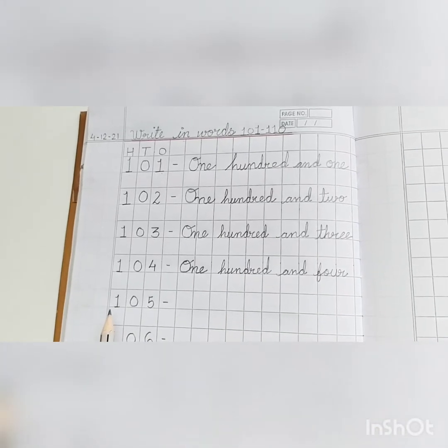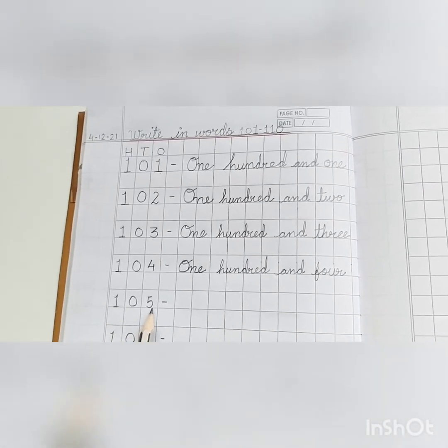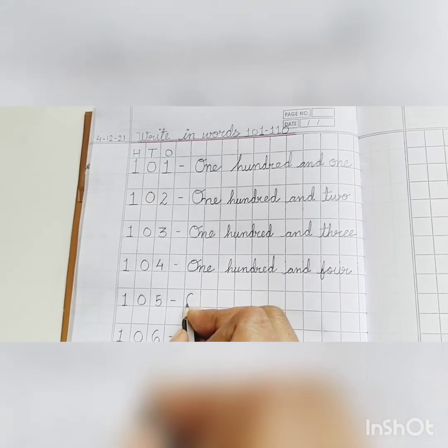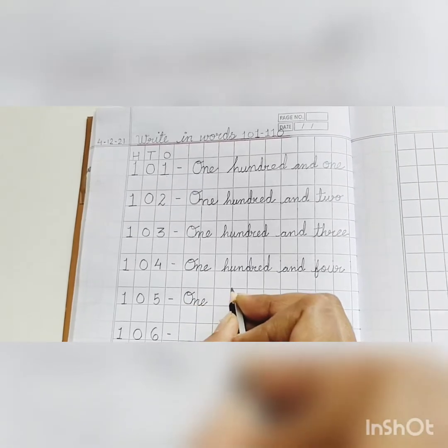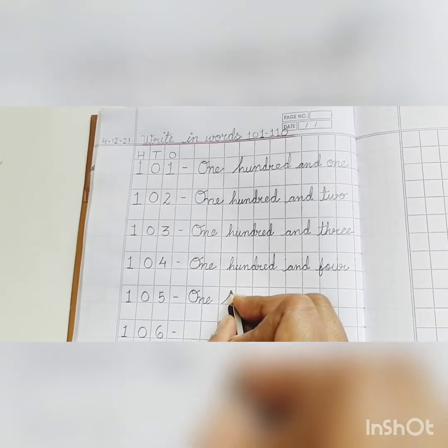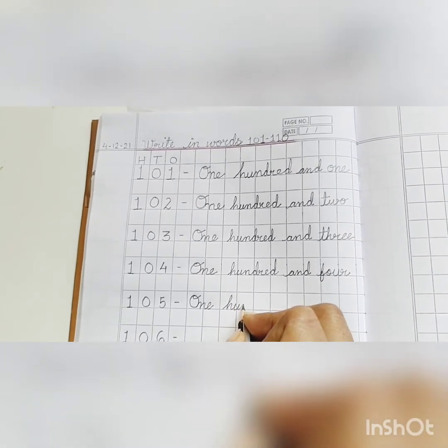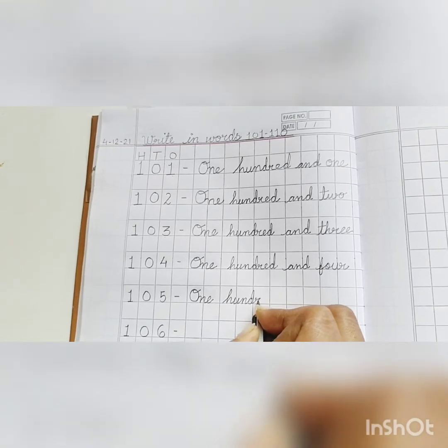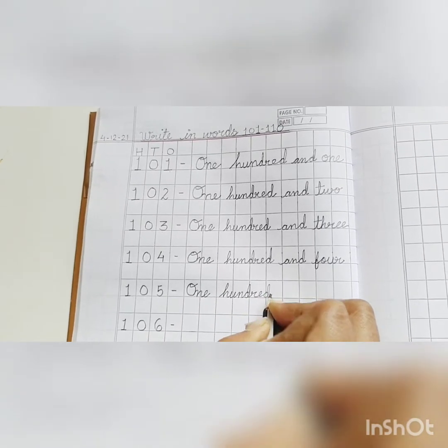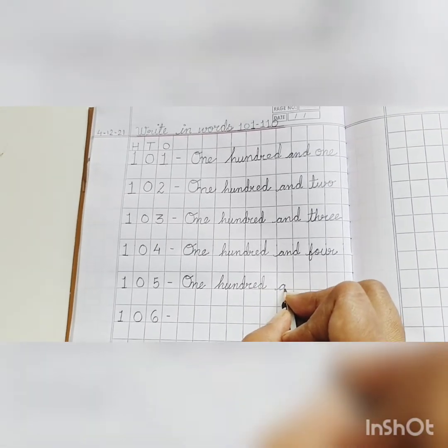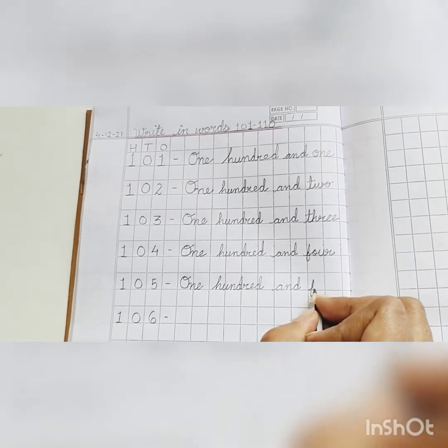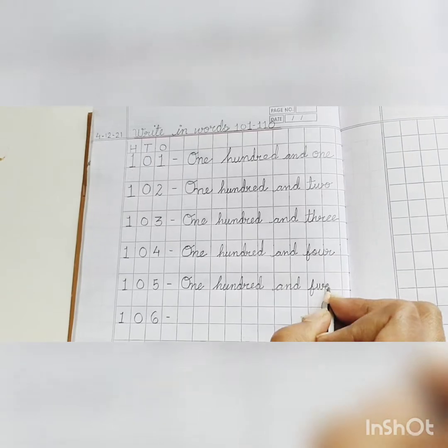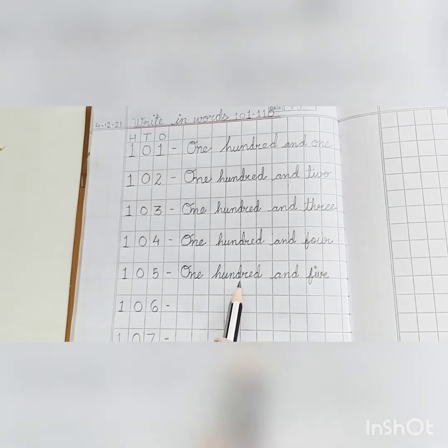Next, 105. Let's write, O-N-E, 1, H-U-N-D-R-E-D, 100, A-N-D and F-I-V-E, 5, 105.